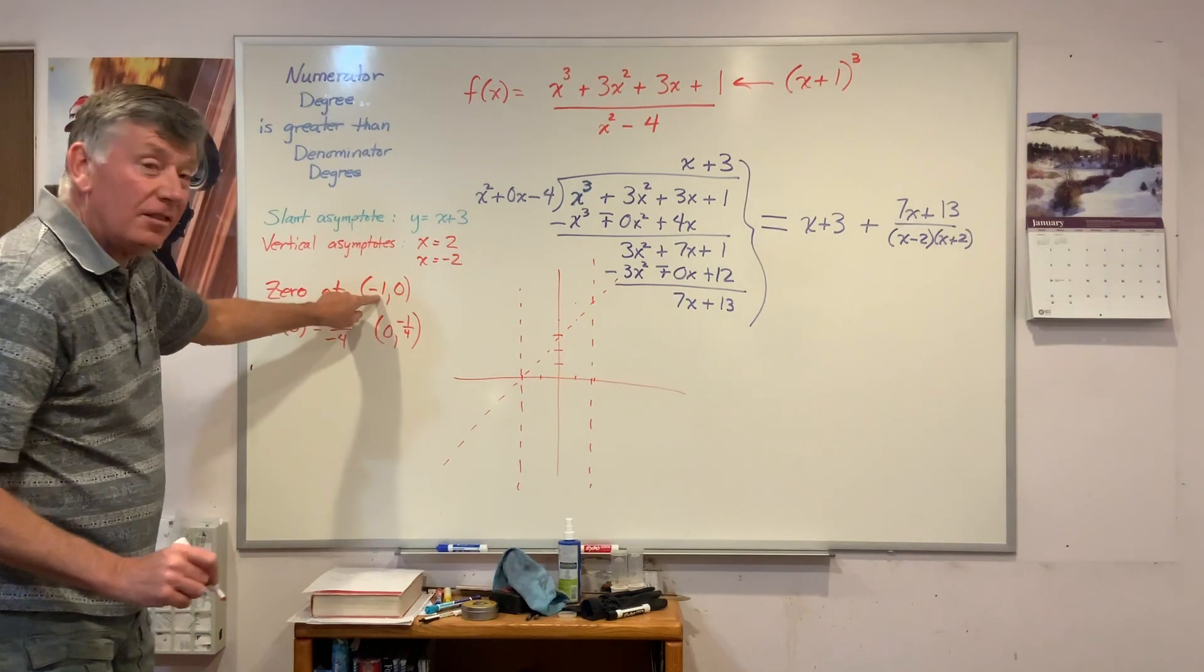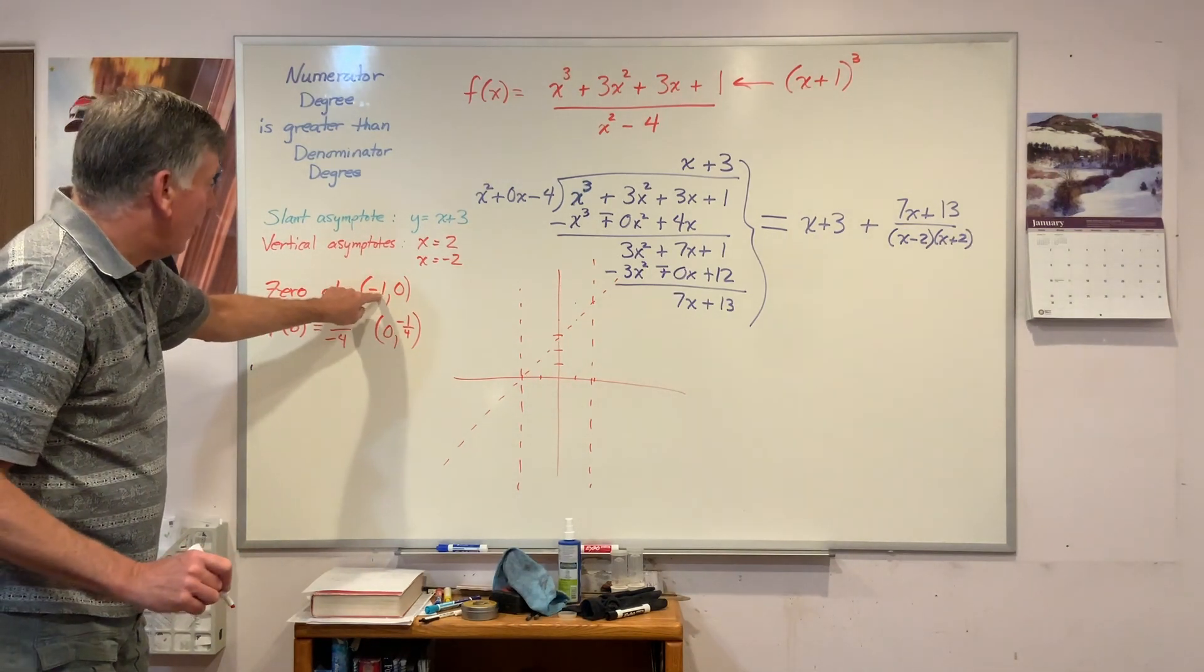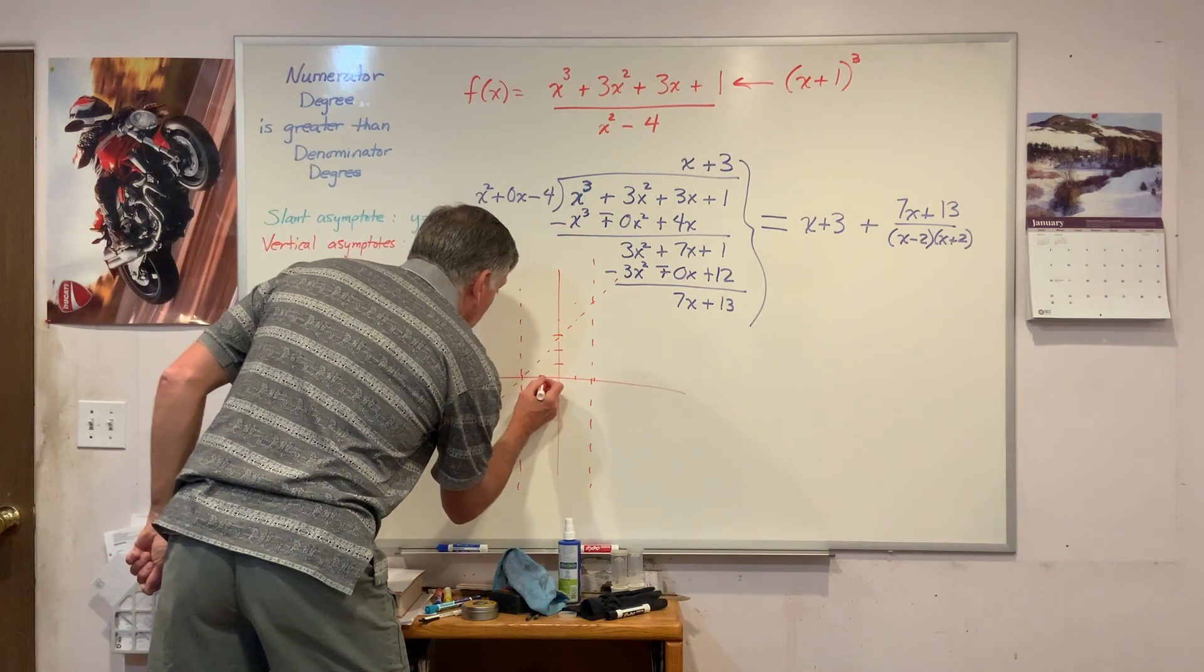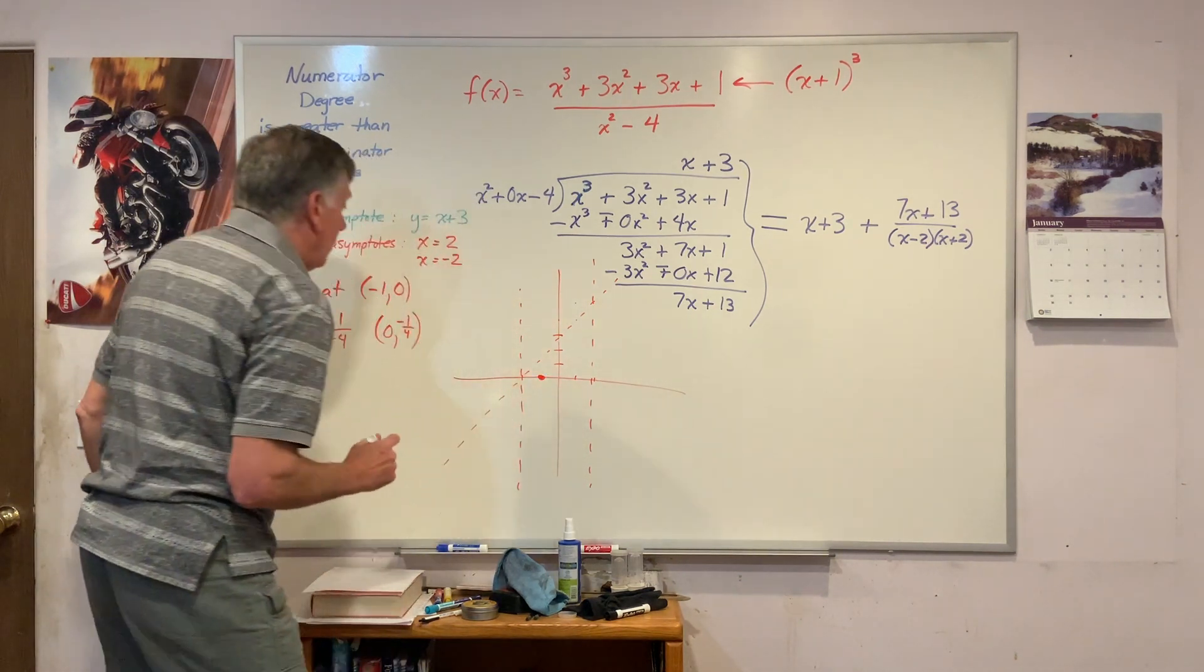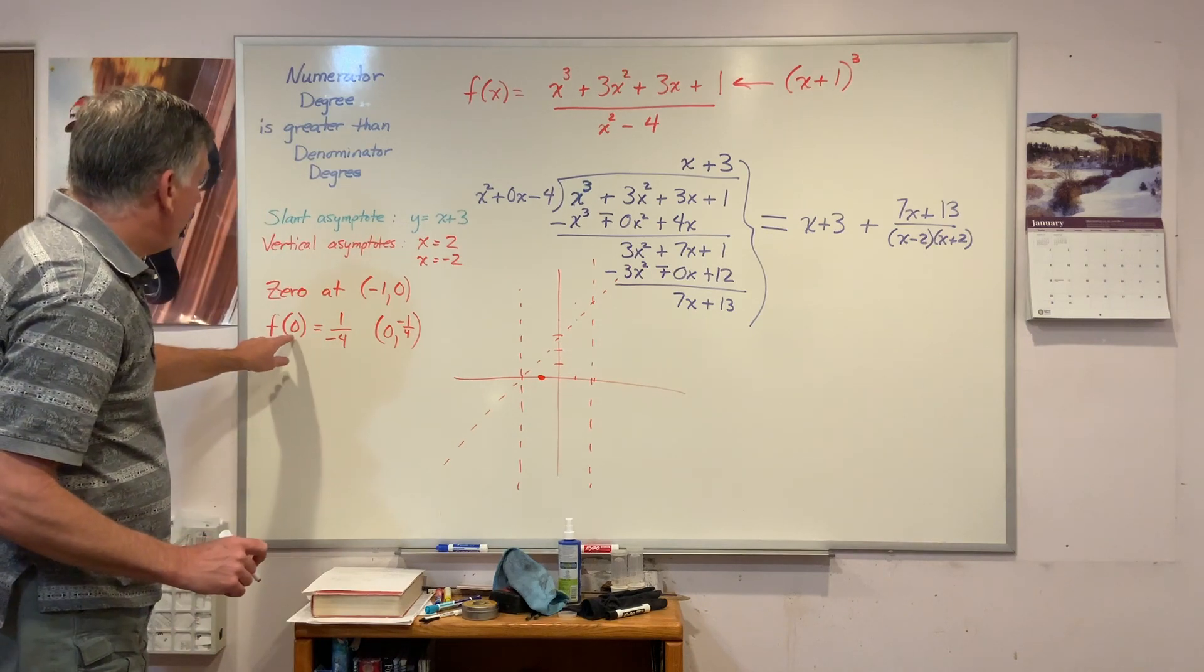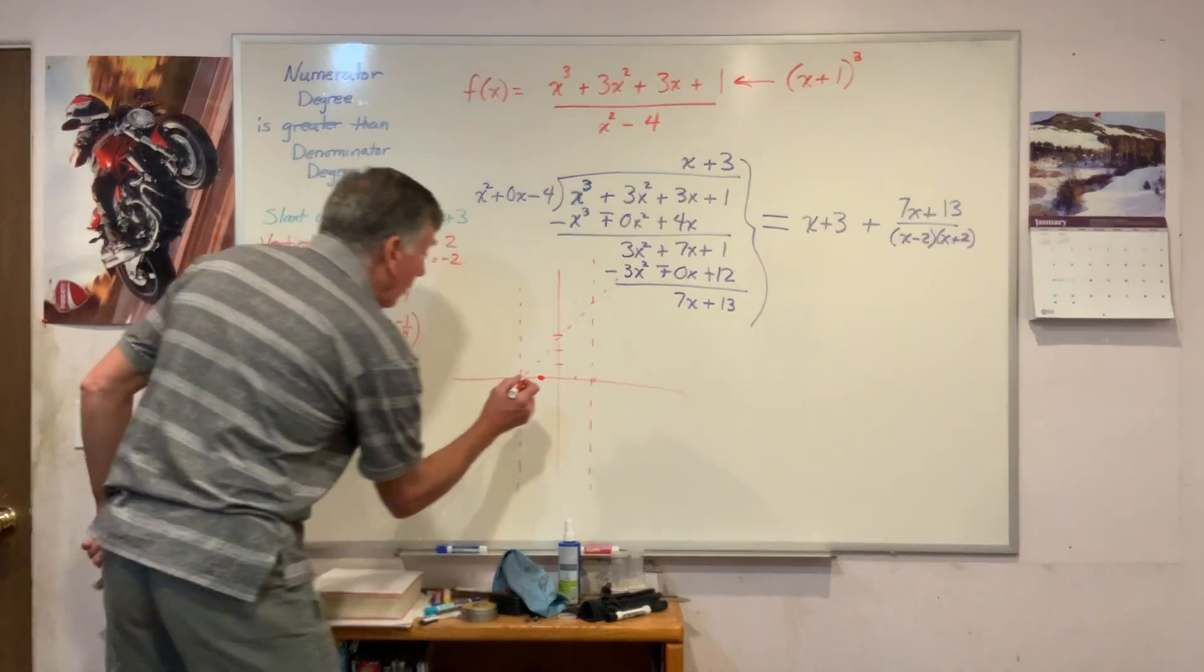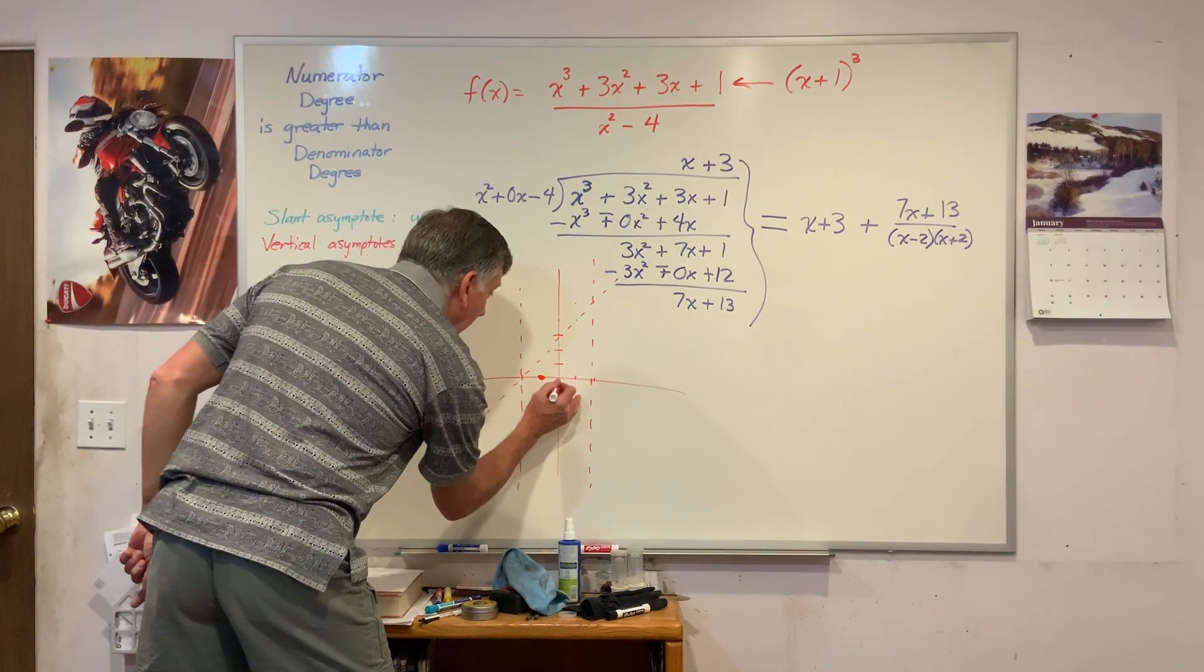My vertical asymptote at 2 and minus 2. My 0, where it crosses the x-axis, at minus 1, 0, right there. My function value at 0, when x is equal to 0, is minus 1 fourth, right there.